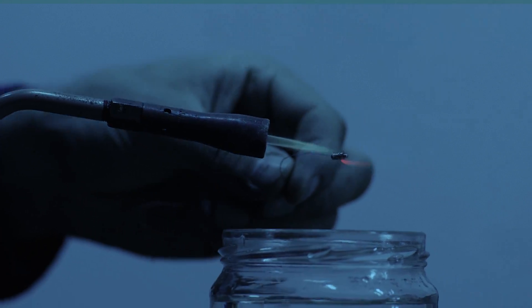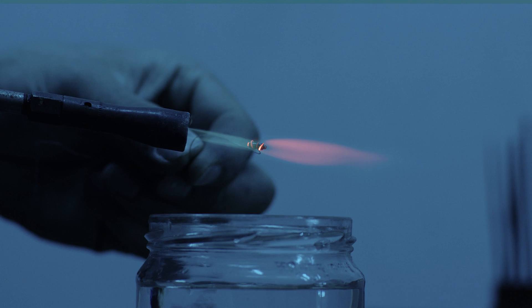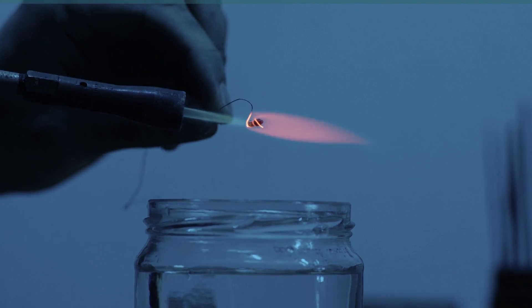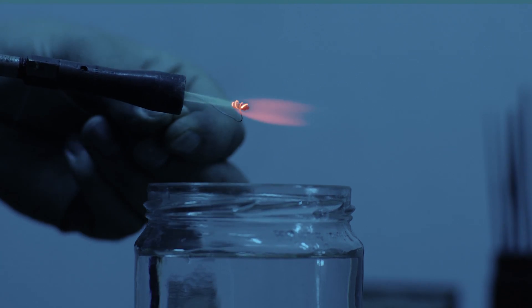A gas torch is used to heat the pillar to cherry red. It is then plunged vertically into water. This hardens the steel.